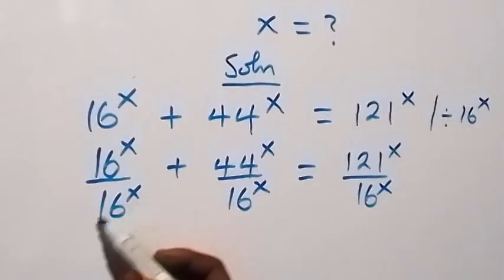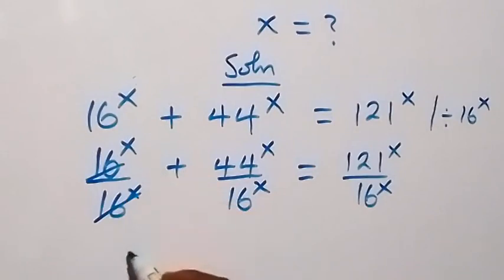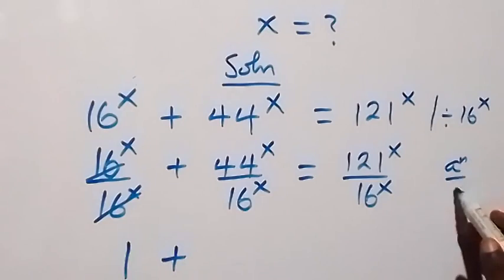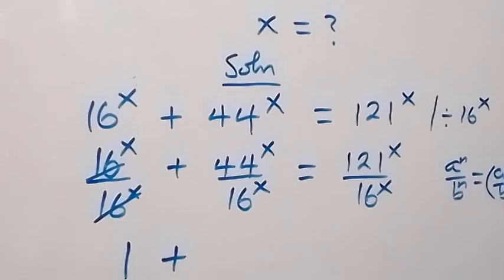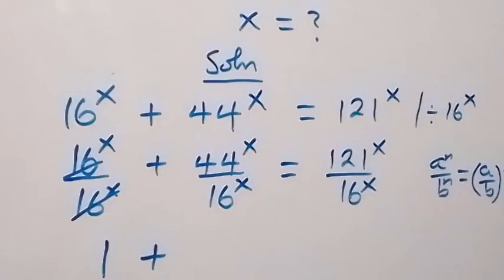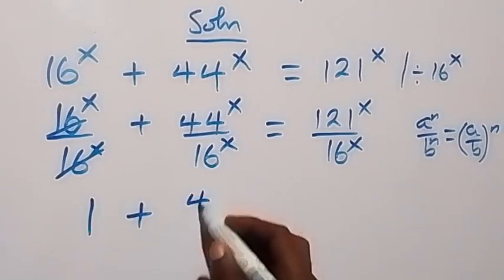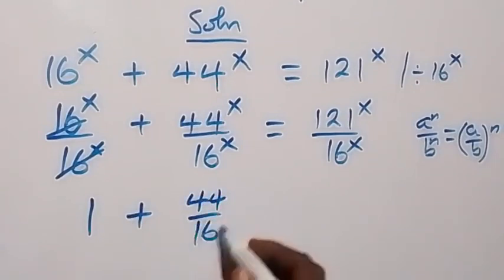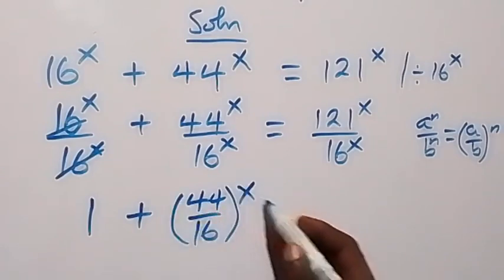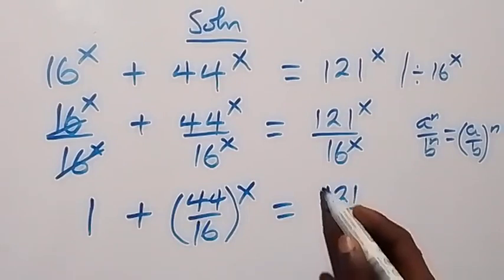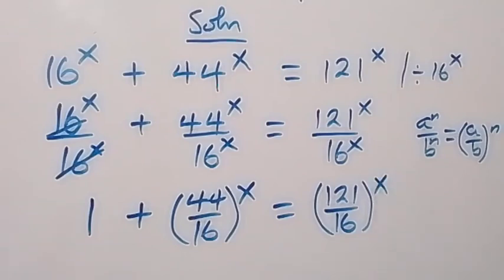The first term cancels out and becomes 1. Applying the law of indices — a^n over b^n equals (a/b)^n — we have 1 plus (44/16)^x equals (121/16)^x.